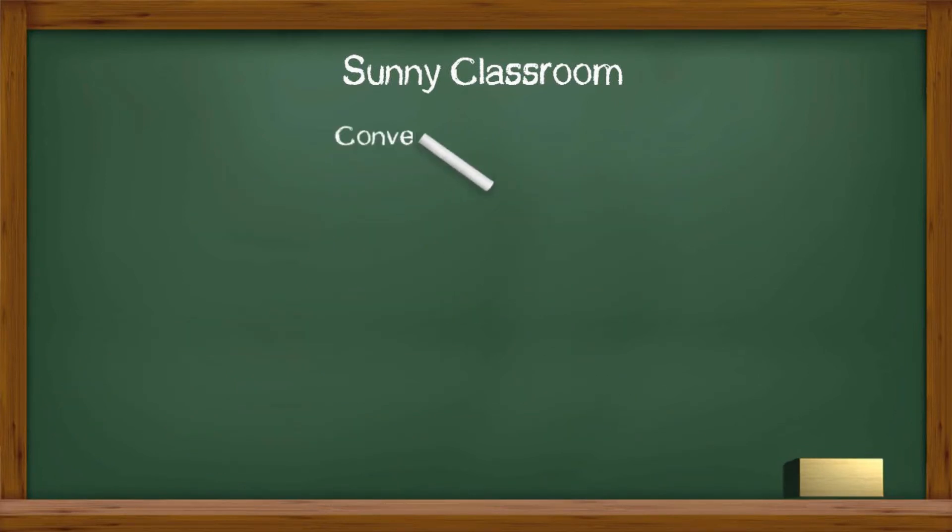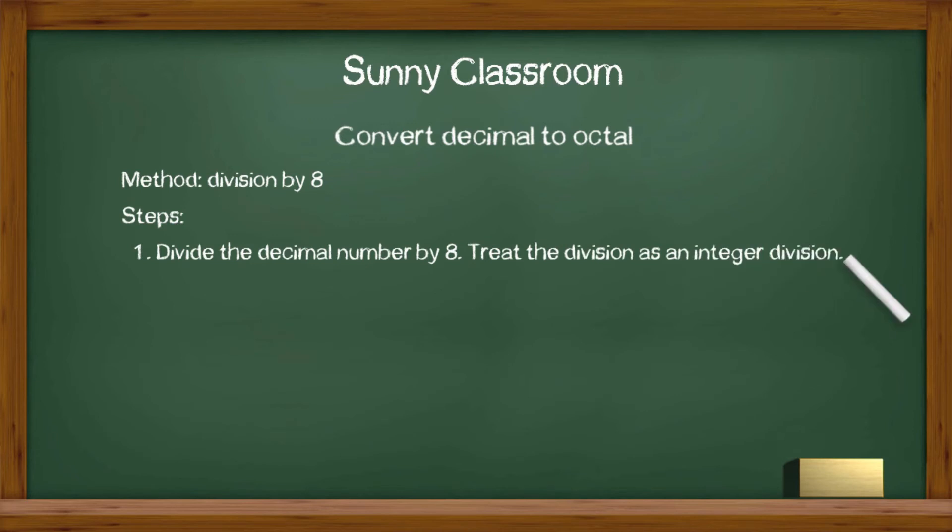The method of converting decimal to octal is division by 8. The process involves 5 steps. Step 1: Divide the decimal number by 8. Treat the division as an integer division. Step 2: Write down the remainder.